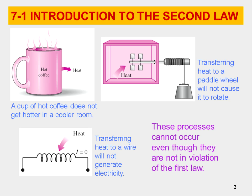Here we have several figures. In the first, we have a cup of hot coffee — the hot coffee will release heat into the cooler room, but the coffee will not get hotter; it will get cooler. If I have a paddle wheel rotating, the paddle wheel produces heat, but no matter how much heat I add, that paddle wheel is not going to move. In another case, a wire that generates electricity will get hot and release heat, but if I try to add heat into that wire, it will not produce electricity.